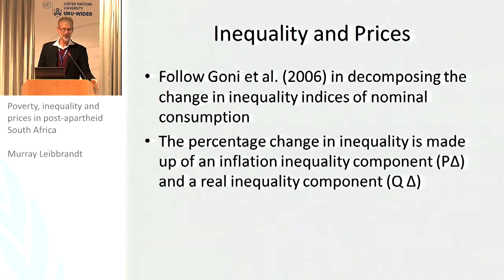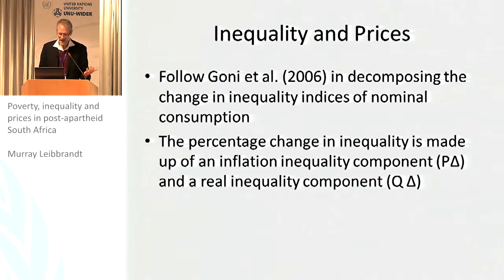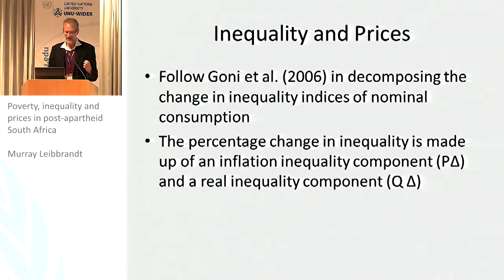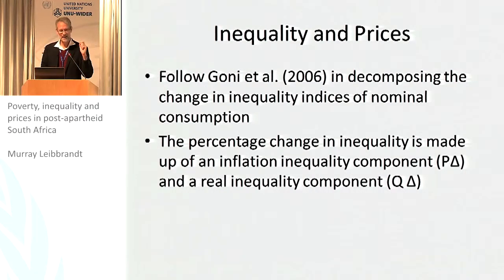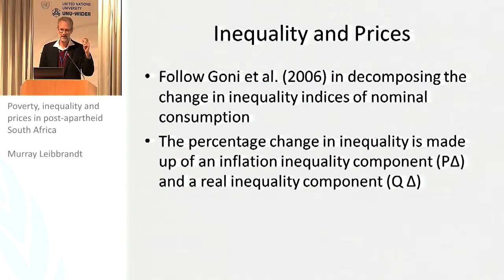Moving on to inequality: there are similar techniques that allow us to use the data we have. They aren't as sophisticated as the full toolkit approach, but they do enable us to break apart the expenditure effect into a price effect and a real change in welfare. Following Goni, we decompose inequality indices into a nominal consumption effect — a nominal change in inequality decomposed into an effect due to changes in prices and a real inequality component. Each household is valued using a household-specific price index based on their consumption bundle.